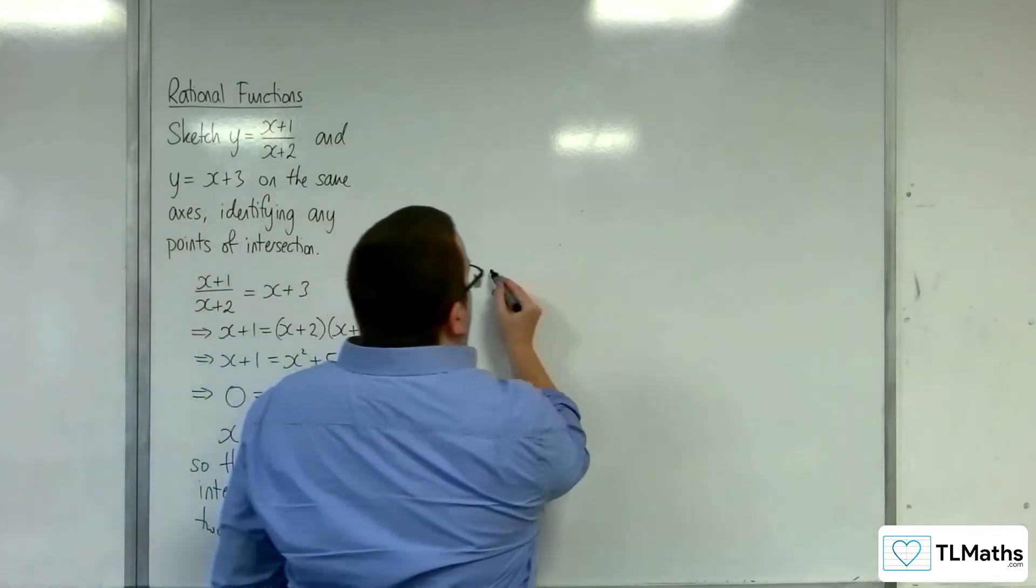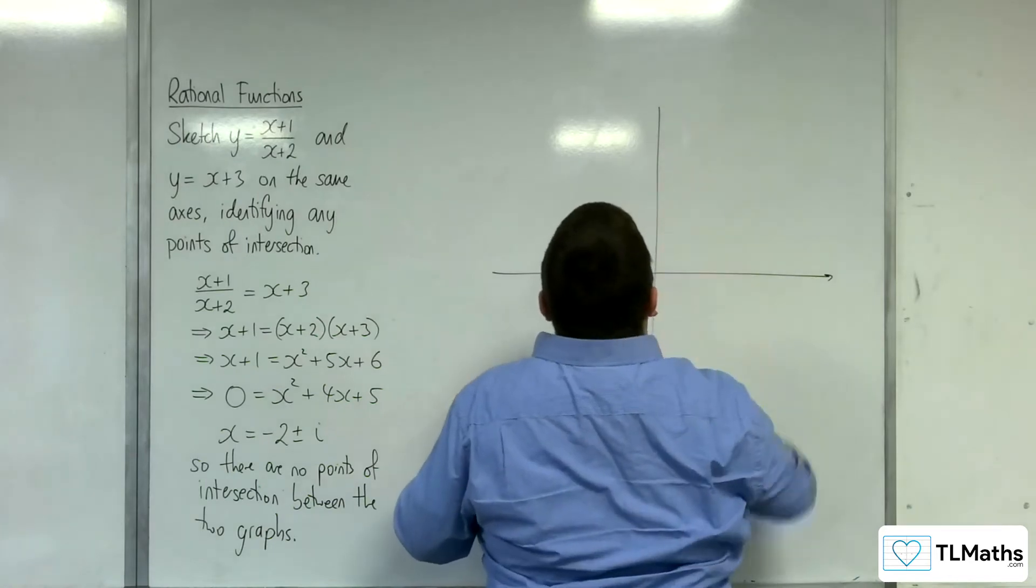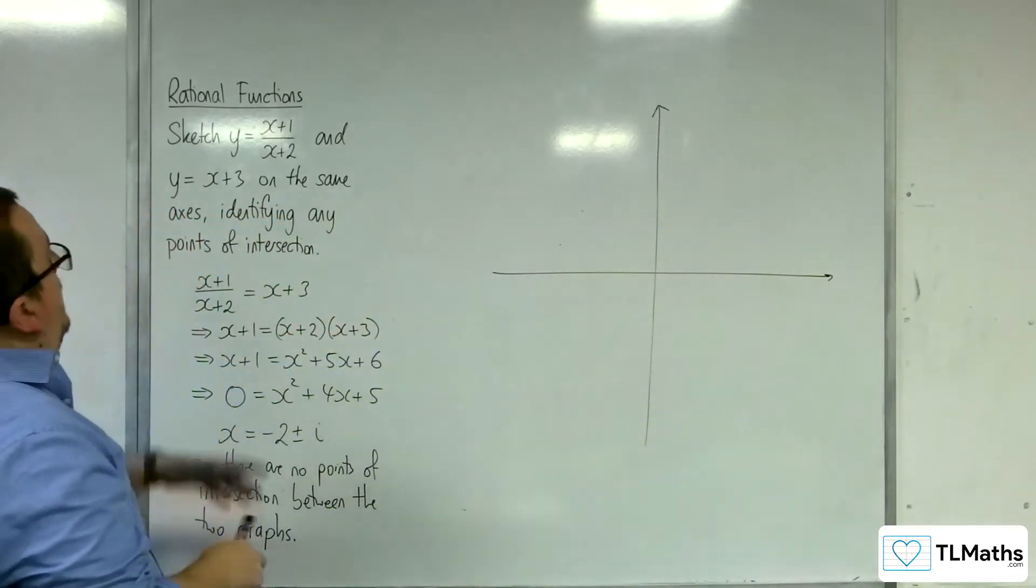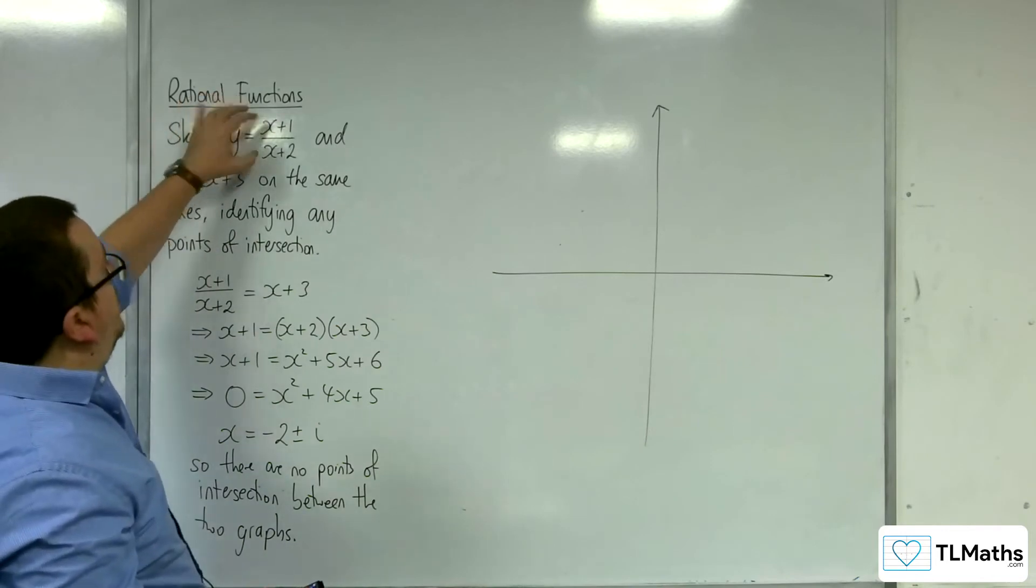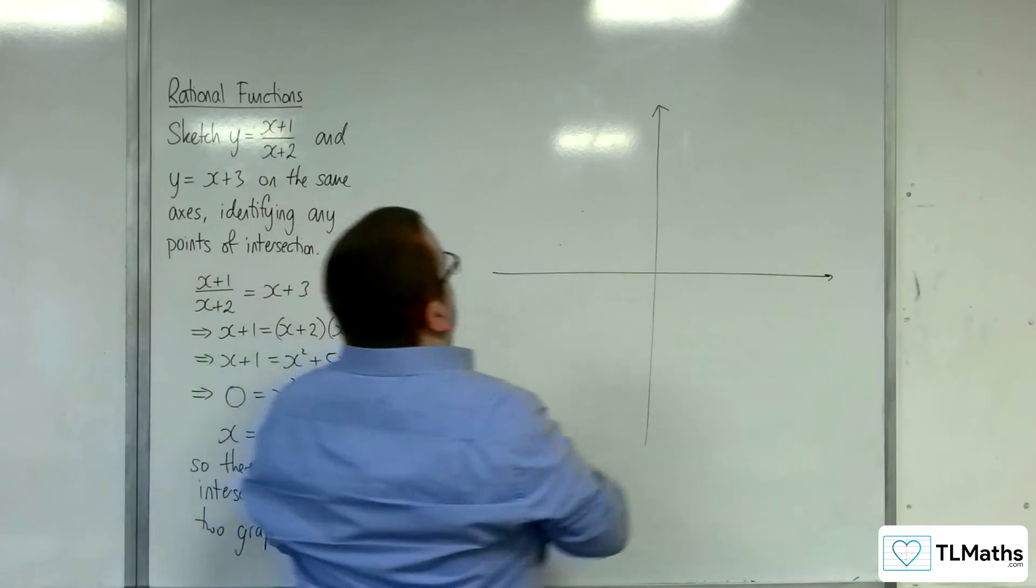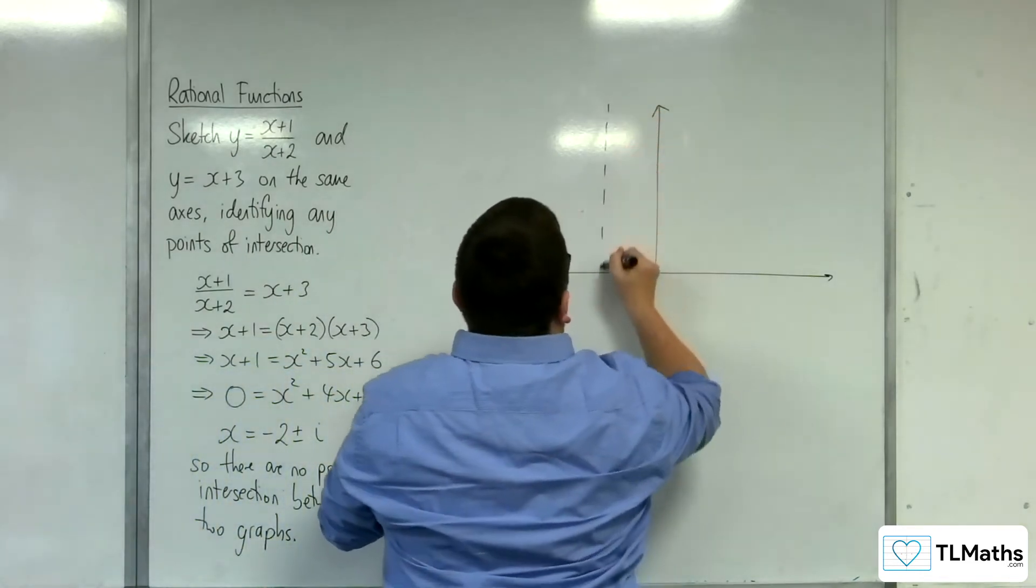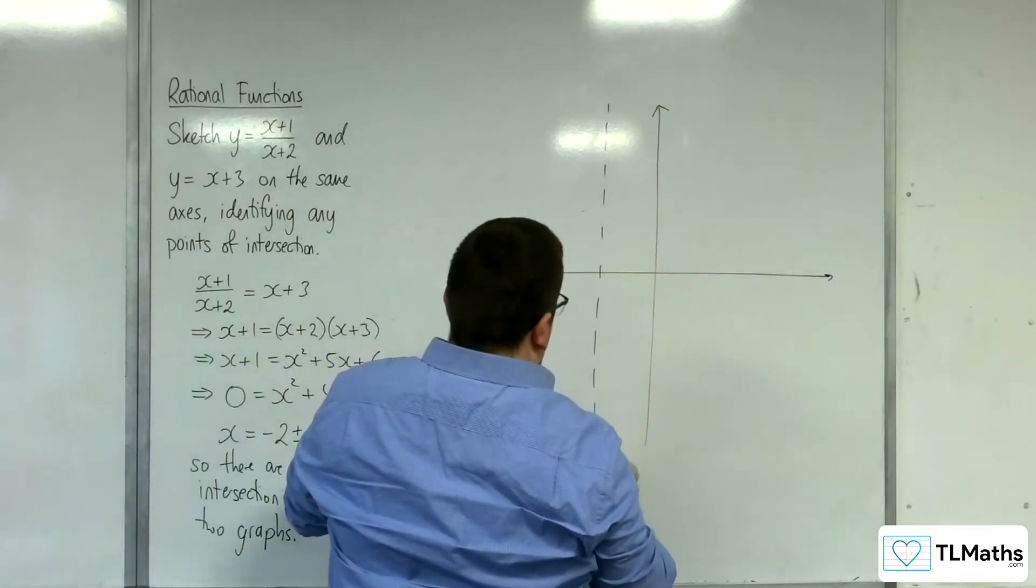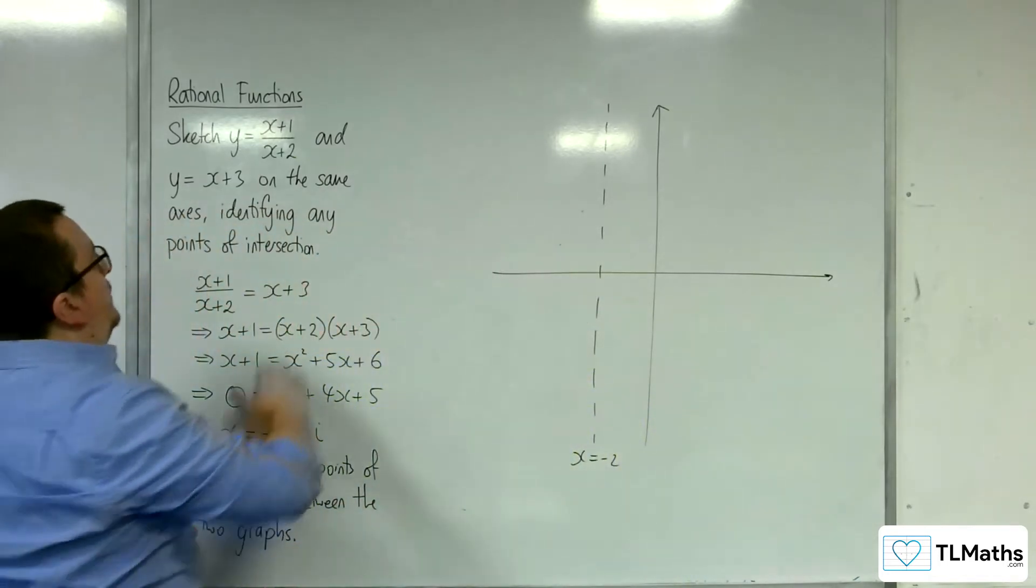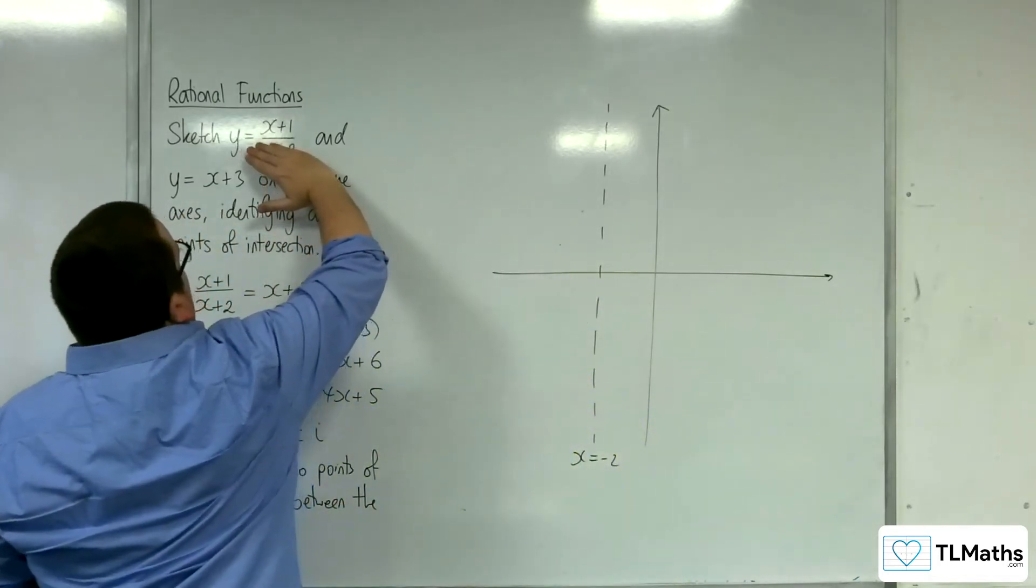So let's draw the rational function first, because that's the more complicated one to deal with. So y equals x plus 1 over x plus 2, that's going to have a vertical asymptote when x equals minus 2. And it's going to cross the x-axis when the numerator is 0, so at minus 1.